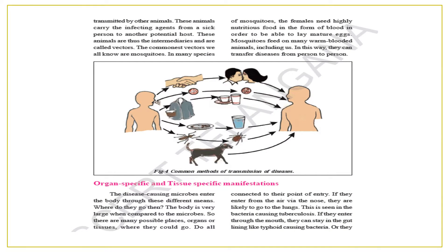How is the disease transmitted? These animals carry the infected agents from a host — a sick person — to another potential host. These animals are thus the intermediators and are called vectors. The animals which are intermediators of the disease infection are called vectors.